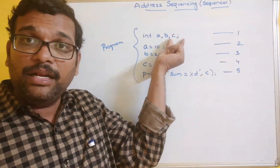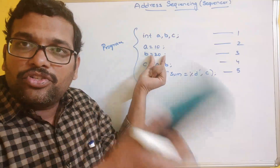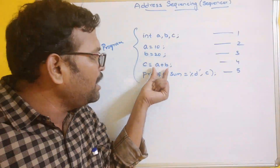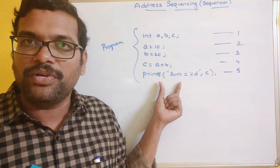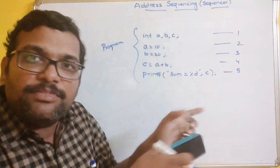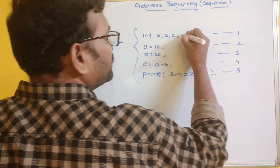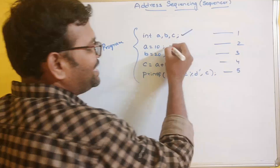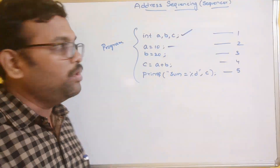The execution should be done only in a particular sequence. First the declaration should be done, then the values assigned into the variables, then the logic executed, then the output statement. So these instructions must be executed in the same sequence — while executing the first instruction, the address of the next instruction should be loaded into the address register.